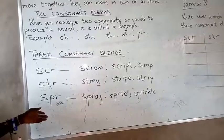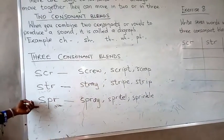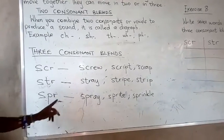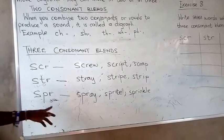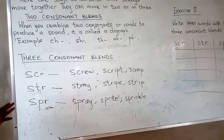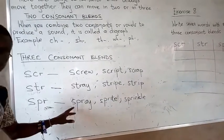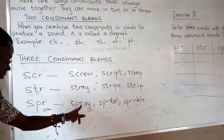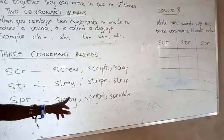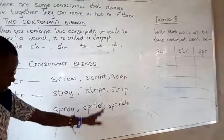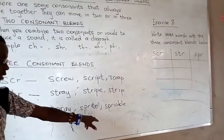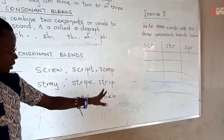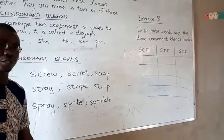The last three consonant blend we are looking at is the SPR. These three also always move together, as in 'spray' — S, P, R, A, Y — as in 'Sprite,' a soft drink, and 'sprinkle.' STR plus the other letters — that is how they move.